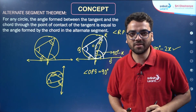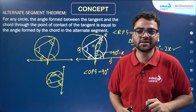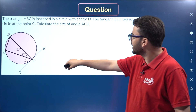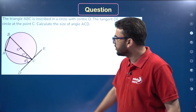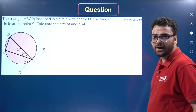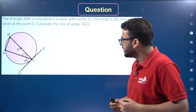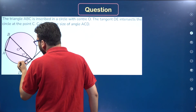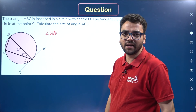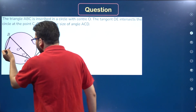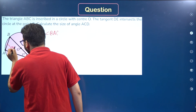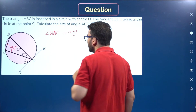I hope the proof of this theorem is clear. Let us do a question based on the alternate segment theorem. In this situation, O is the center of the circle, and we have to find the angle theta. Since O is the center, this becomes a diameter, and hence angle BAC is an angle in the semicircle. Angle in a semicircle is a right angle, so angle BAC equals 90 degrees.